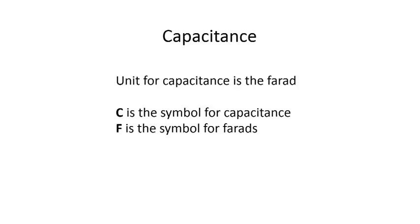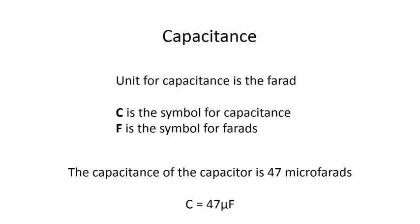The last quantity we're going to discuss is capacitance. The unit that we use is the farad. C is the symbol for capacitance, and F is the symbol for farads. We would say the capacitance of the capacitor is 47 microfarads, or we could write C equals 47 μF.